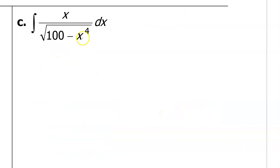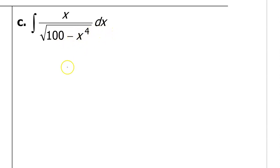For part c, the one change is that x squared has become x to the 4th power. Everything else is the same. How will that change our strategy? In the numerator we have degree 1, in the denominator we have degree 4. Notice that the degree of the denominator wins by 2 or more, therefore we will use inverse trig rules. It looks like we will be using the arcsine rule again, because we still have a constant minus the variable, and that's what we see in the arcsine rule.